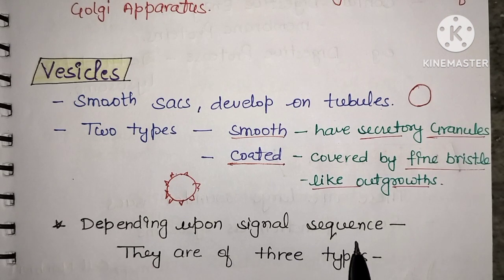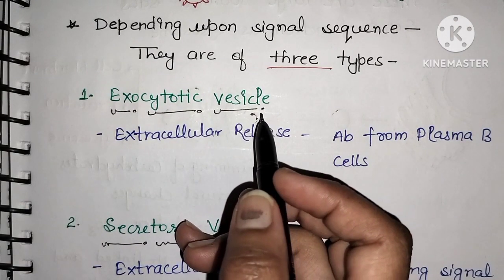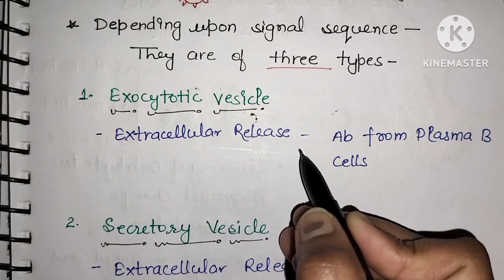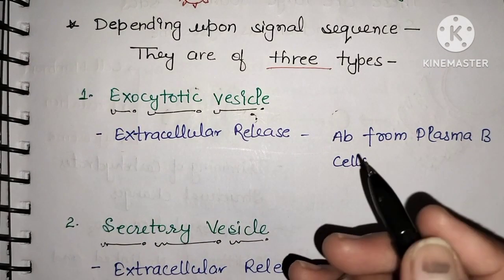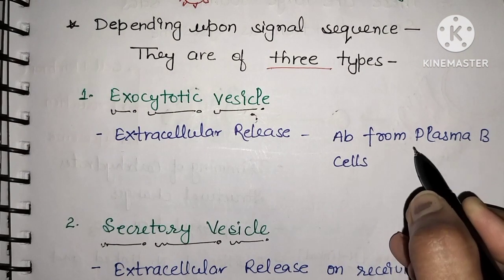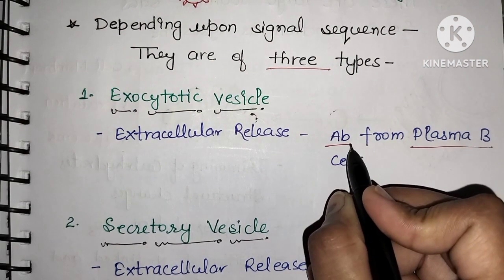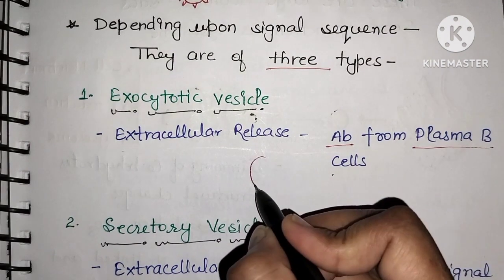Based on their signal sequence, vesicles are of three types. The first is exocytotic vesicles, which are for extracellular release. For example, antibodies are released from the cell to the outside via exocytotic vesicles from the Golgi apparatus.